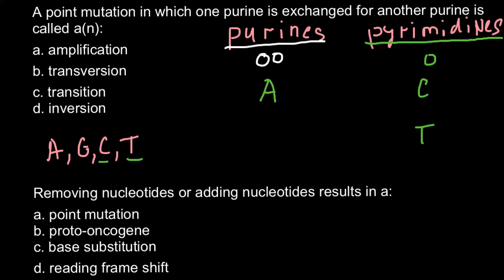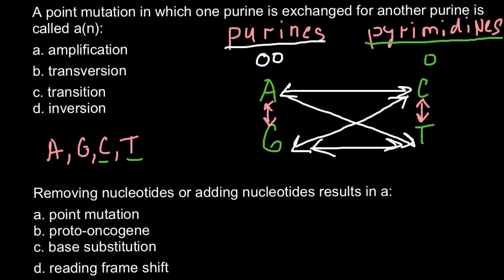We call substitution of pyrimidines with pyrimidines transition. This can be cytosine substituted with thymine or adenine substituted with guanine. We also call this transition. But we may also have such mutations as adenine substituted with cytosine and cytosine with adenine. We may have such mutations. All these mutations that I designate with white arrows would be transversions.